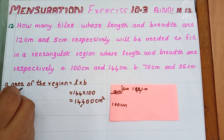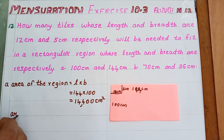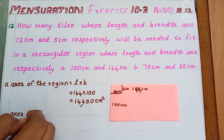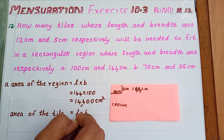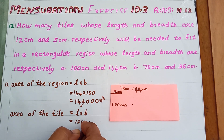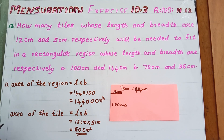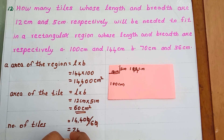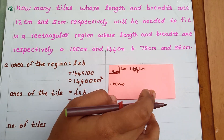14,400 cm² is the area of the whole region. Next, the area of the tile equals length into breadth: 12 cm into 5 cm equals 60 cm². Dividing the region's area by the tile's area: 14,400 divided by 60 equals 240. We need 240 tiles to fill this region.